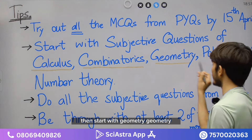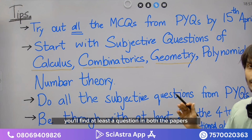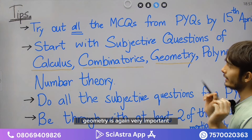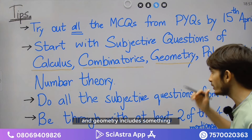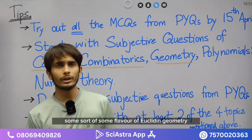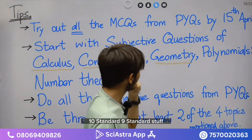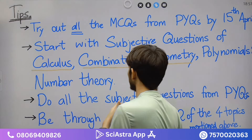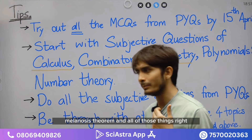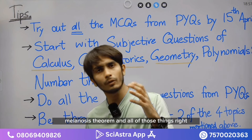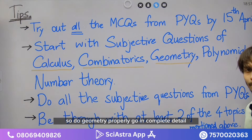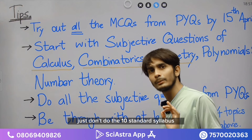Then start with geometry. You'll find at least one question from geometry in both papers, so geometry is again very important. Geometry includes some flavor of Euclidean geometry — 9th and 10th standard stuff — as well as some higher, advanced Euclidean geometry: Stewart's theorem, Menelaus' theorem, and all of those things. So do geometry properly, go in complete detail — just don't do only the 10th standard syllabus. There is a lot beyond that.